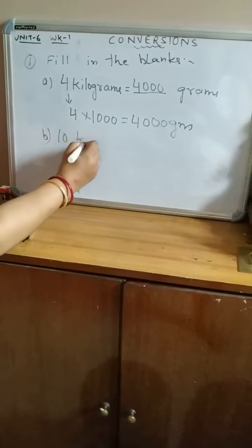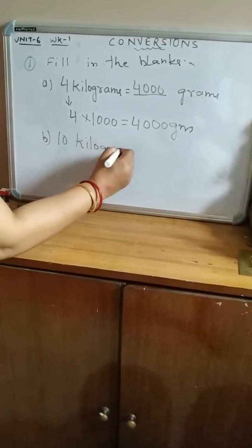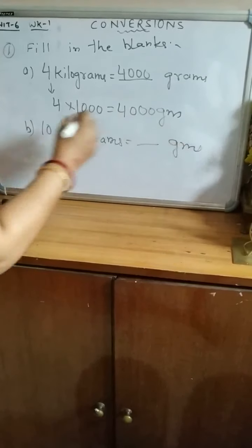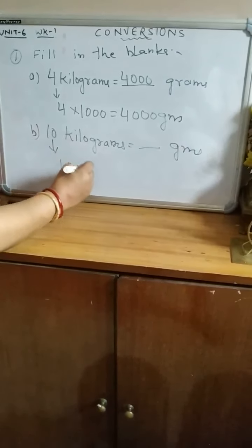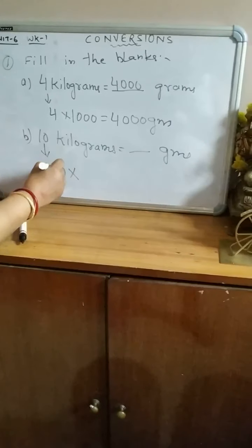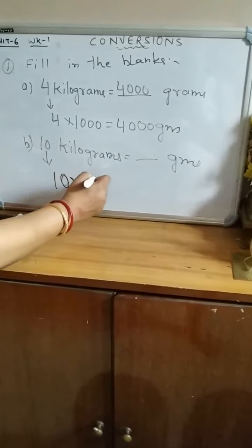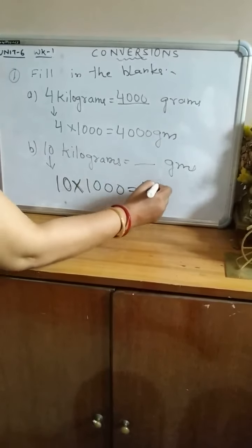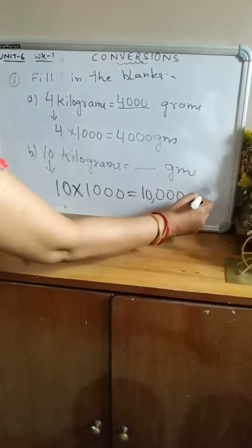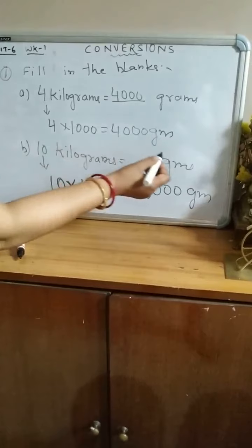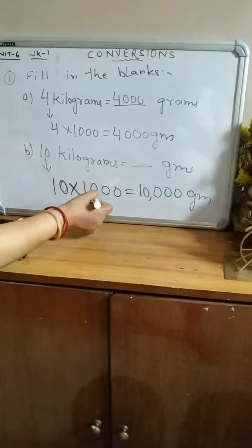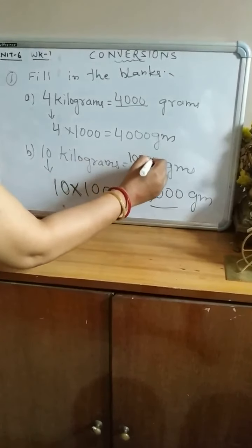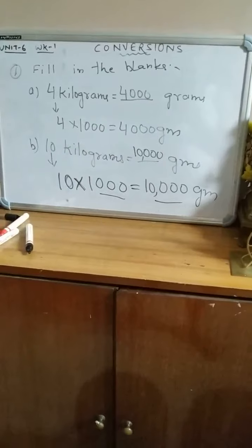Next example: 10 kilograms equals how many grams? The number of kilograms, that is 10, will be multiplied by 1000. After multiplication it will be 10,000 grams. To convert kilogram to gram, multiply the number of kilograms by 1000 and the product is in grams. So it is 10,000 grams.